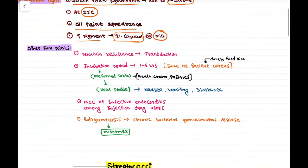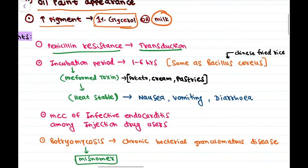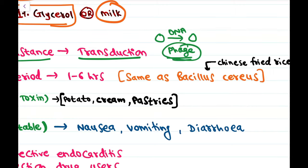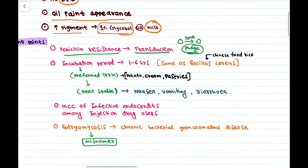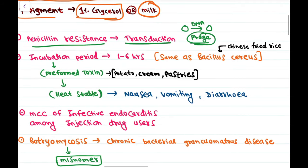Penicillin resistance in Staphylococcus is due to transduction — the transfer of DNA from one bacterium to another, mediated by bacteriophage. The incubation period for Staphylococcus aureus toxicity is 1 to 6 hours after ingestion.